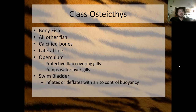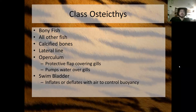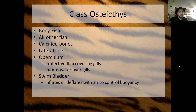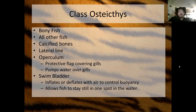The swim bladder inflates or deflates with air to control buoyancy — whether something is floating or sinking and how much floating or sinking it's doing. Most fish use their swim bladder to maintain neutral buoyancy, meaning they will not float or sink. Wherever they are in the water, they'll just stay there unless they voluntarily move.